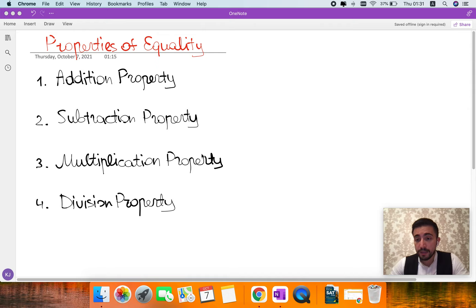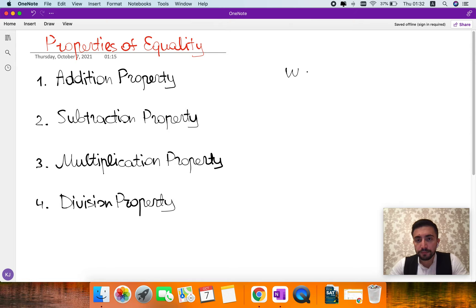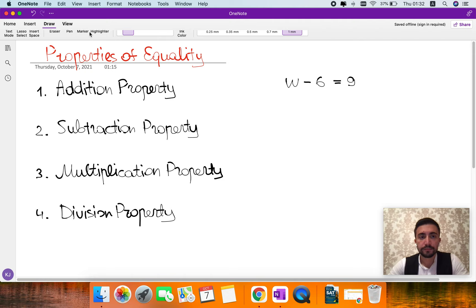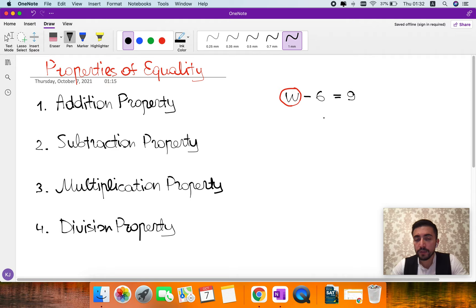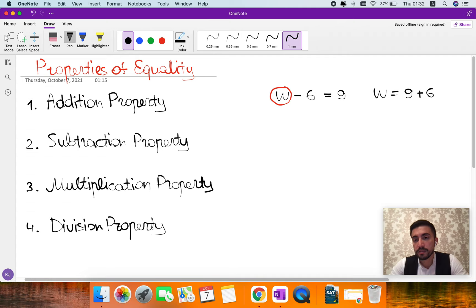Let's discuss each of them one by one. Let me give you examples. First, let's talk about addition property. So let's say W minus 6 equals 9. We need to isolate variable W. To do this, we need to move negative 6 to the right side of the equation. As you guys know, when the number or any other element goes to the other side of the equation, the sign always changes.